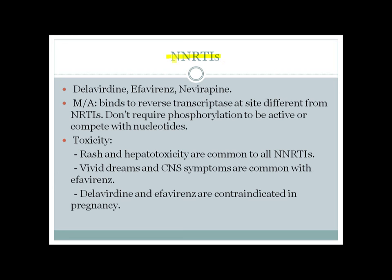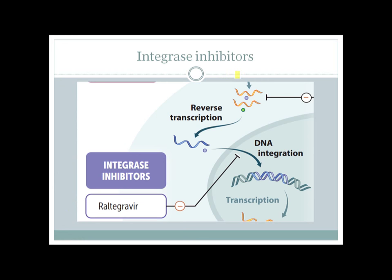Non-nucleoside reverse transcriptase inhibitors include delavirdine, efavirenz, and nevirapine. Their mechanism is slightly different from NRTIs: they do not require phosphorylation to be active, and they bind reverse transcriptase at a different site without competing with nucleotides. Toxicities associated with NNRTIs are rash and hepatotoxicity, common to all NNRTIs. Efavirenz can be associated with vivid dreams and CNS symptoms. In pregnancy, delavirdine and efavirenz should not be used — only nevirapine is appropriate.